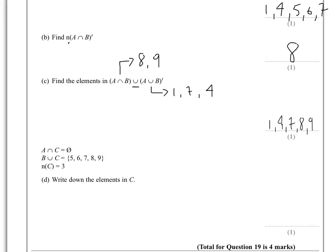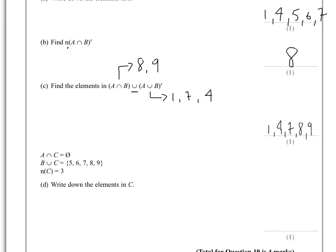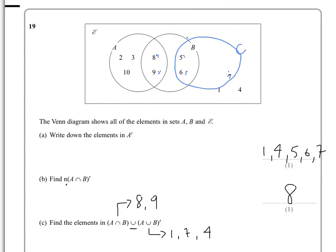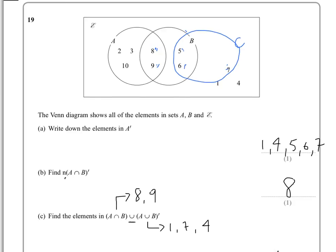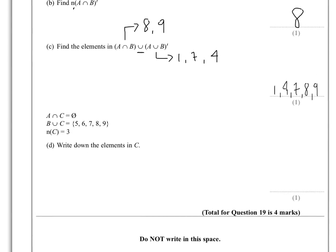Does A intersect with C? Nope. Does C have 3 elements in there? C contains 5, 6, and 7. Yes, it does. So what that, therefore, tells us is that the elements actually in C are 5, 6, and 7.